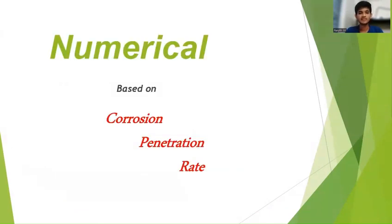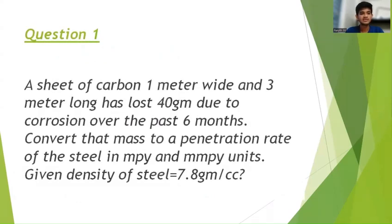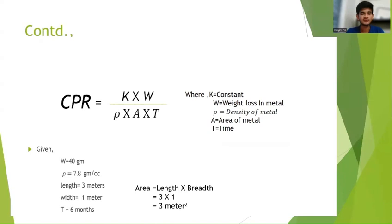Now let us discuss a numerical based on corrosion penetration rate. Question 1: A sheet of carbon steel, 1 meter wide and 3 meters long, has lost 40 grams due to corrosion over the past 6 months. Convert that mass to a penetration rate of the steel in MPY and MMPY units. Given: density of steel = 7.8 grams per cc. The formula is CPR = K × W / (ρ × A × T). The given data: weight loss W = 40 grams, density = 7.8 g/cc, length = 3 meters, width = 1 meter, and time = 6 months.